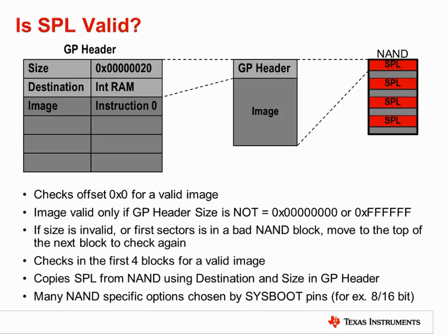The possibility of bad blocks in the boot section of the NAND flash means that the SPL image could become corrupted. In order to counter this possibility, the AM335X ROM bootloader recognizes up to four copies of the SPL. It will begin by attempting to load the first copy at an offset of zero. If the first copy of the SPL resides in a bad block, the ROM bootloader will move to the second, third, and finally the fourth. Additionally, if the header of any of the SPL copies contains an invalid size — which would be either zero or all ones — then the ROM bootloader will move to the next copy in the sequence.